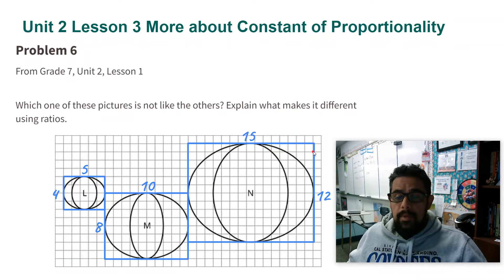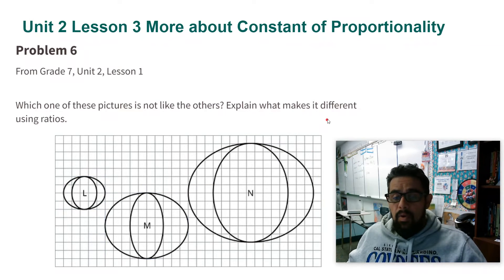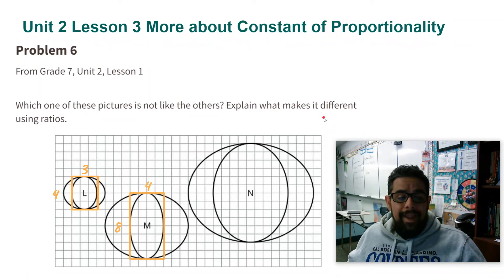So the outside oval is the same for all three of them. Now we're going to check the inside oval and see what the ratios are for that. For L there it's 4 to 3.